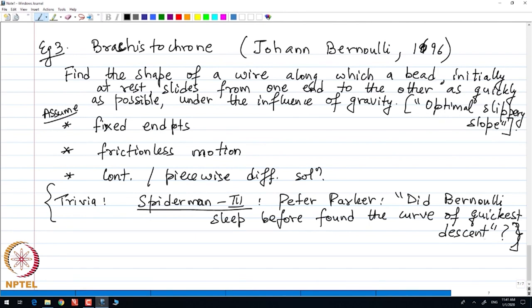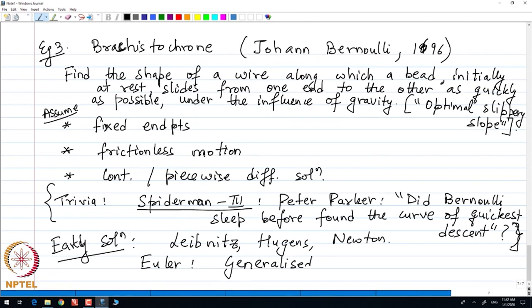In this case, Peter Parker was referring to the problem of the brachistochrone, which we are going to talk about in depth over the course of our lecture. The early solutions to this problem was given by Leibniz, Huygens and Newton himself, Isaac Newton.